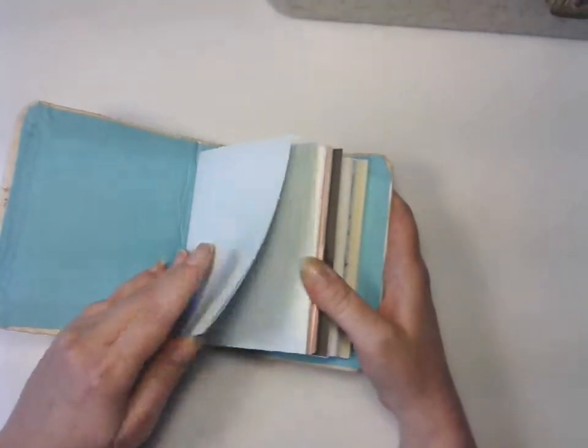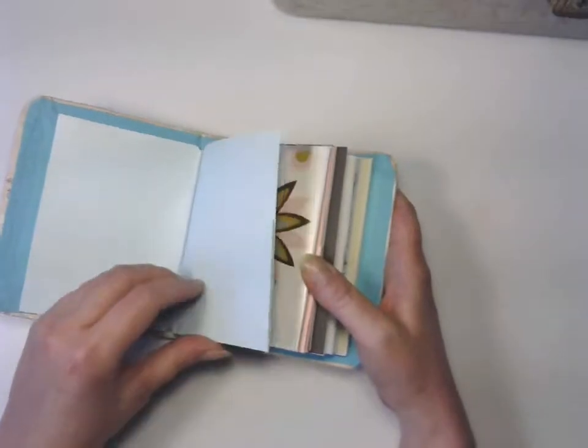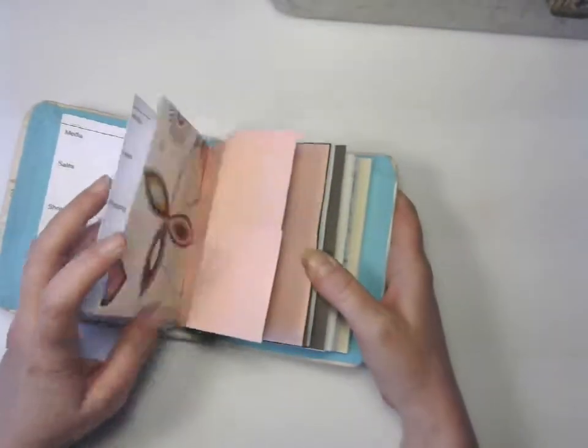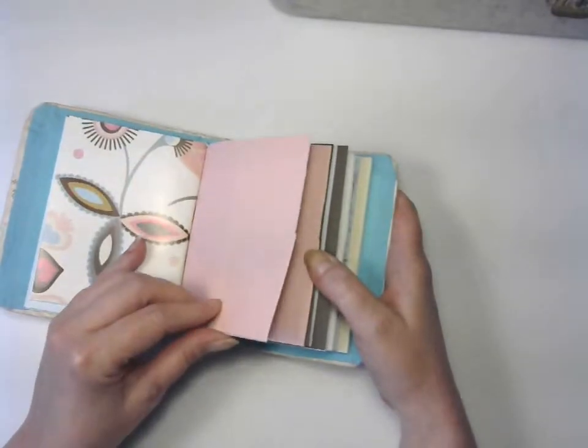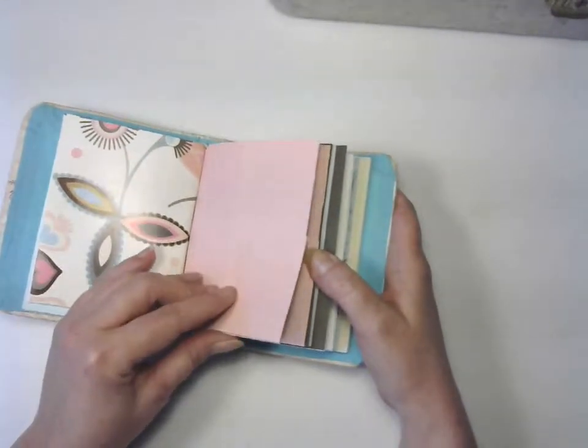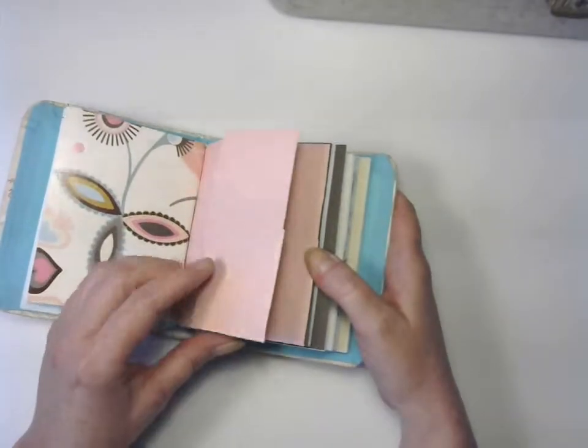I covered it with some fabric that I liked, and I made some inserts. Like this will be a receipt envelope, and this will be a planner. I'm waiting to find the right washi tape to put in here, so that's why things aren't completely put together yet.